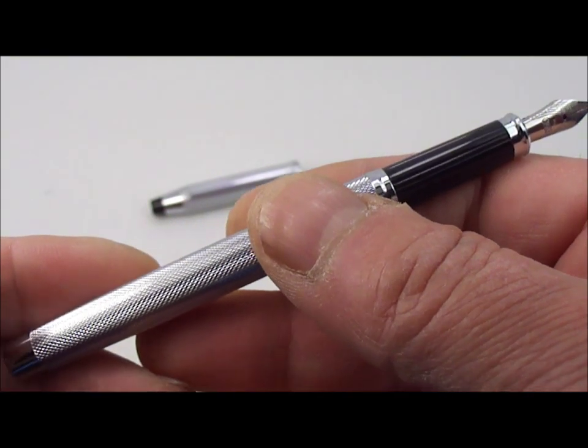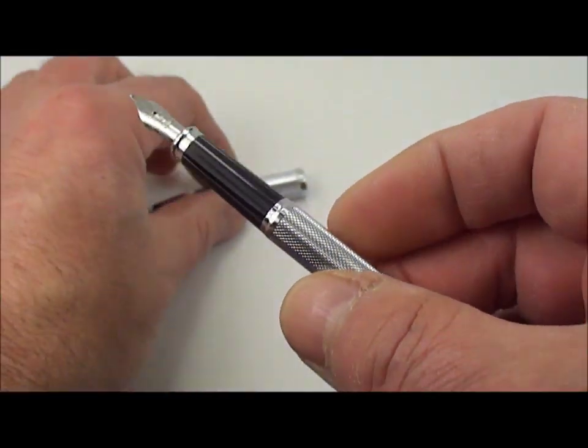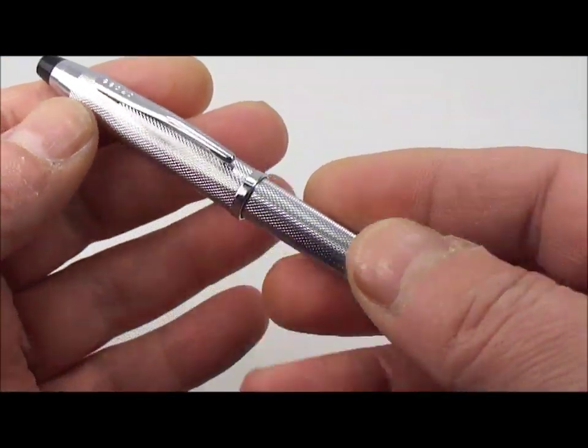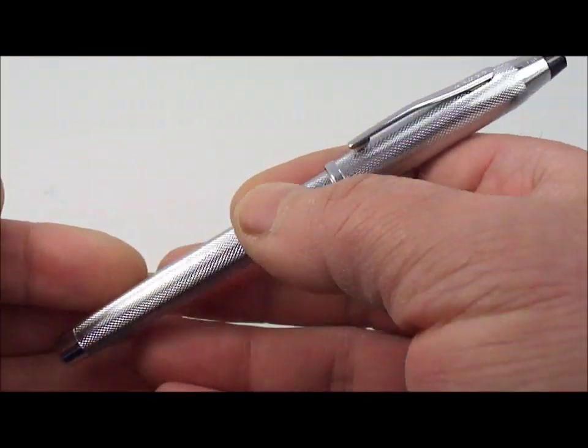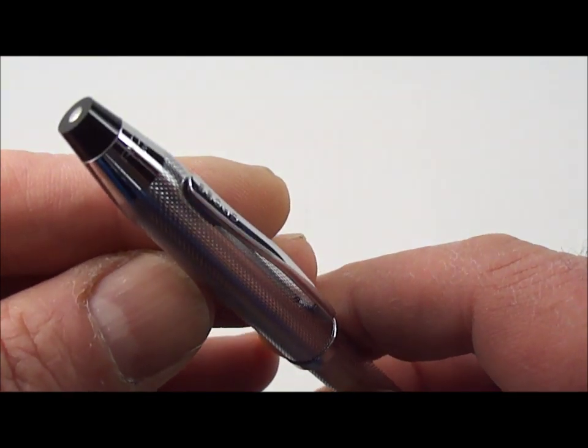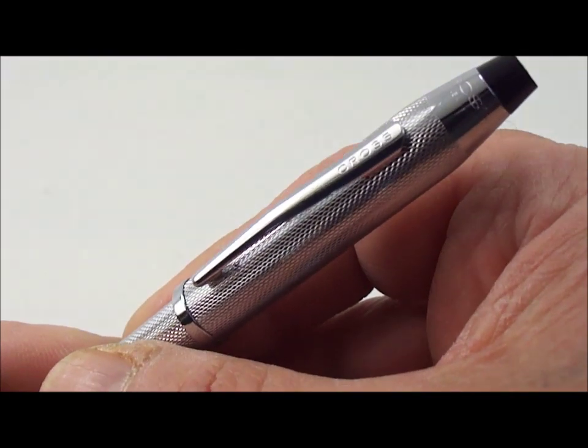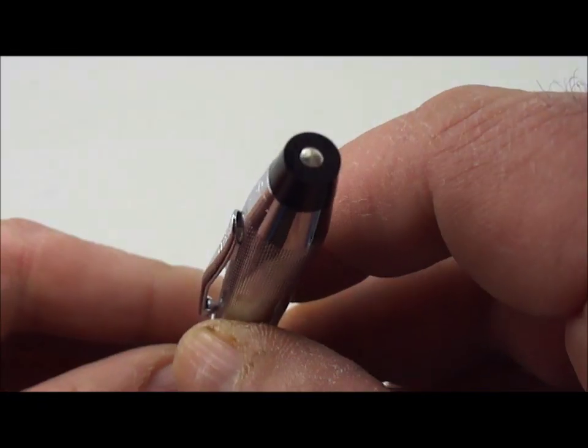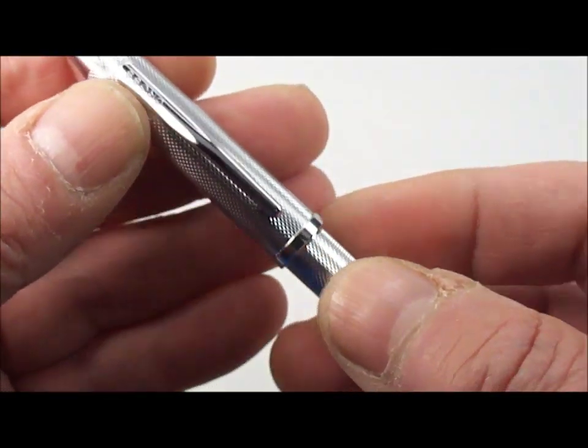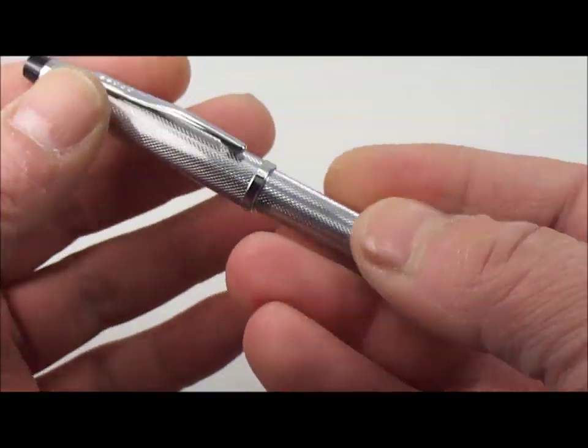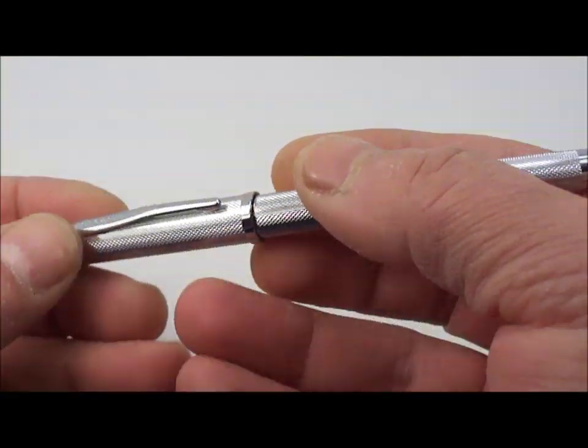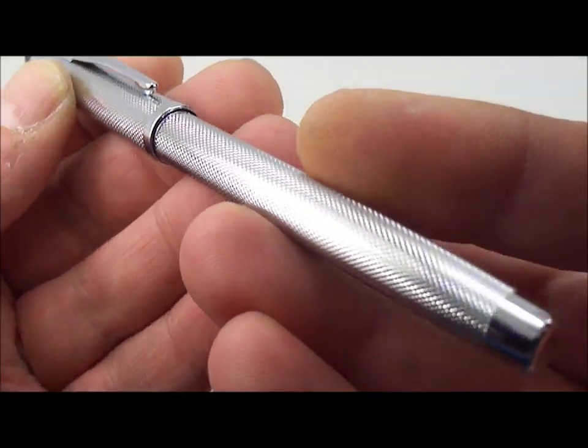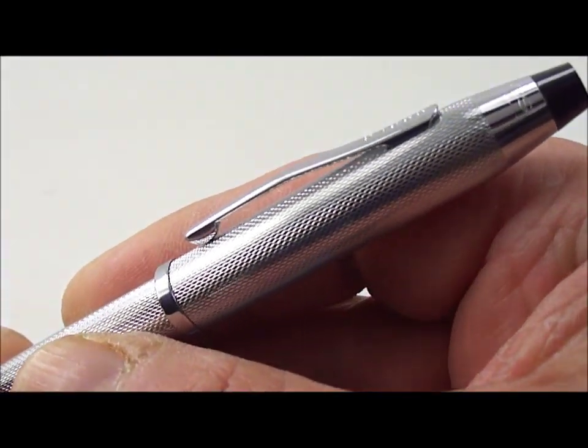And basically that's it ladies and gentlemen. That is my Cross or AT Cross Century Mark II. Slightly fatter than the original Century model, was made in USA, imprint reads Cross USA on it and in absolutely superb condition, never been inked. Absolutely beautiful pen, it's got a nice weight to it as well but a very handsome pen. And to be quite honest with you, I don't actually think this video is doing the pen any justice.